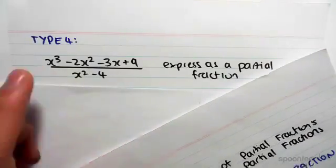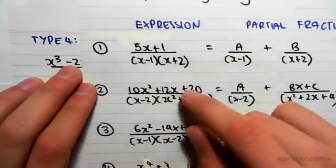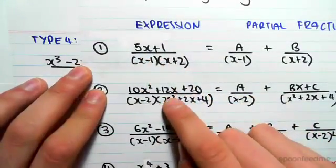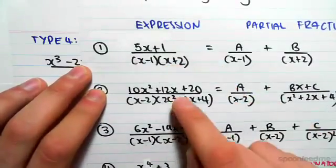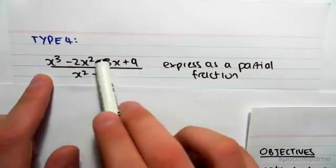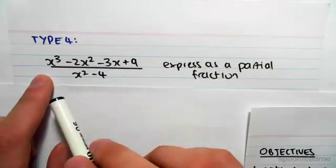We're going to have to perform long division. All the other examples we've done have been that the power of the numerator is less than the power of the denominator. So we have a linear on a quadratic or a quadratic on a cubic. In this case we have a cubic on a quadratic. So once again the degree of the numerator is greater than the degree of the denominator.